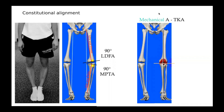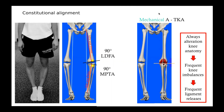Let's start with the mechanical alignment. The goal is to create a straight limb with a perpendicular joint line. The implants are aligned on the long bone mechanical axis, perpendicular to it. When performing MA TKA, most patients have a severe alteration of their knee anatomy, which generates frequent knee imbalance that needs to be corrected with a soft tissue release.